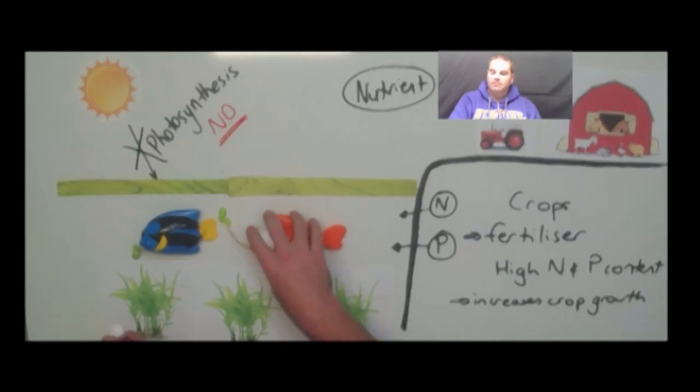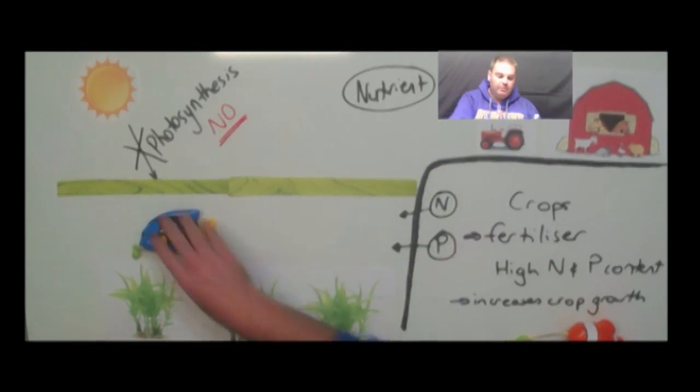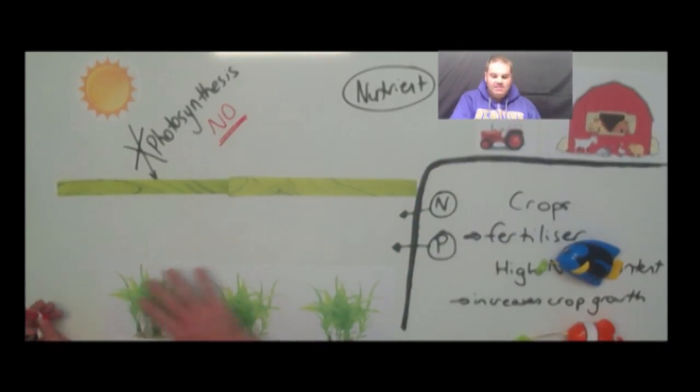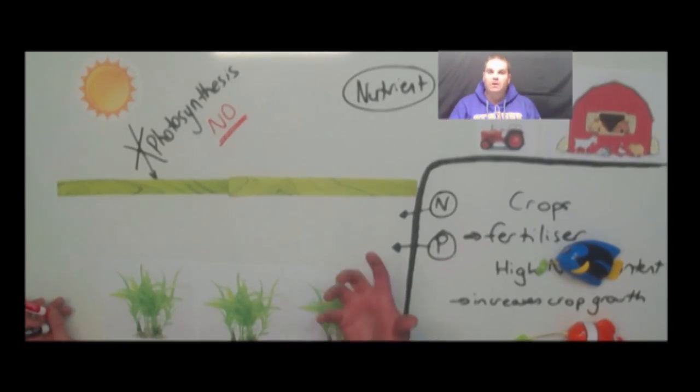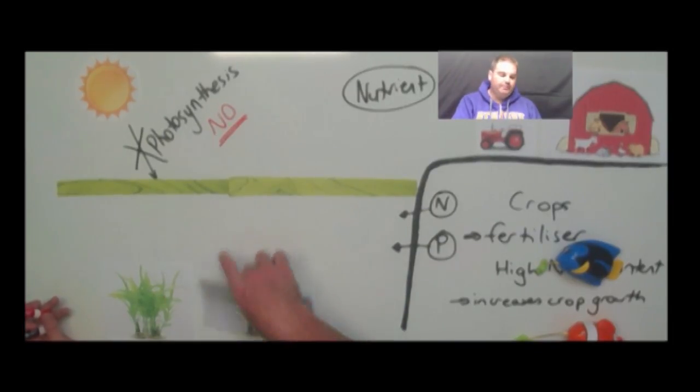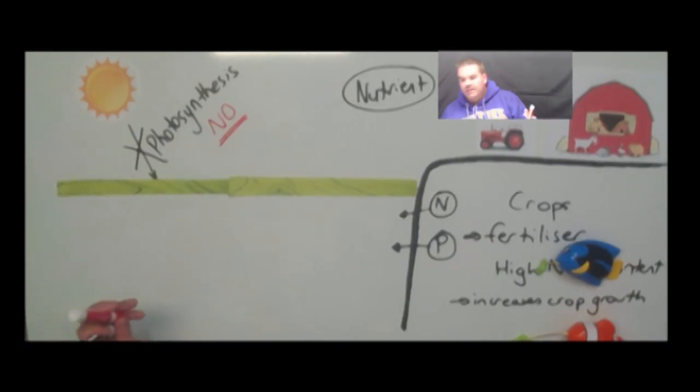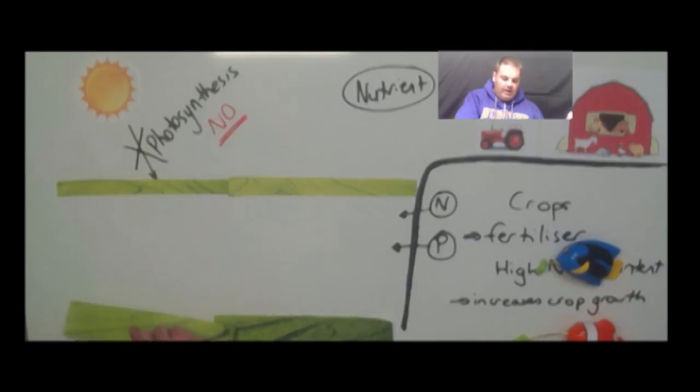So what that does, I'm just going to move Nemo and Dory out of the way here for the moment. It means that these plants down the bottom can no longer photosynthesize. That means they're no longer replenishing the oxygen in the waterways. Now because these plants can't photosynthesize, they die off. So they start to die off. And what happens is basically they turn into just bio-organic mass down the bottom.